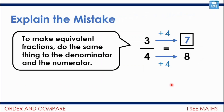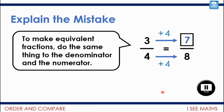Okay, explain the mistake. To make equivalent fractions, do the same thing to the denominator and the numerator. This child thinks three quarters is the same as seven eighths because they've added 4 to the numerator and to the denominator. Pause the video — what mistake has been made?